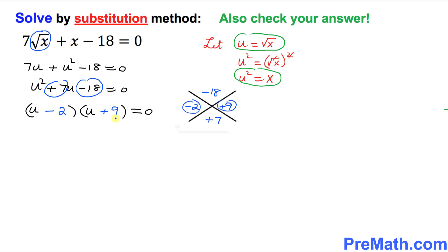Let's do now. Since we have these two factors equal to 0, I can split them up. I can separate them. I'm going to say u minus 2 equal to 0. And this side, u plus 9 equal to 0. So that is going to give us u equal to positive 2. And on this side, u is going to be equal to negative 9.